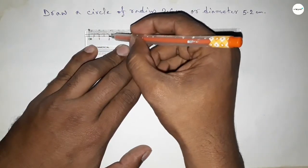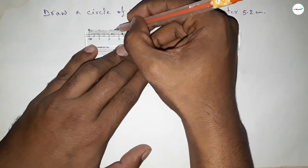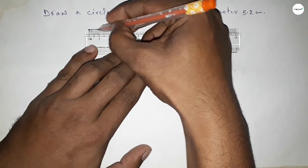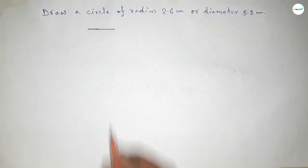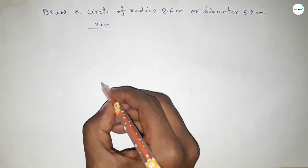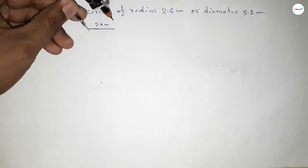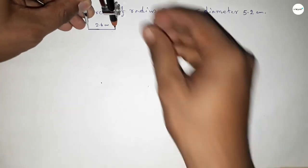So this is 0, 1, 2, and this is 5, 6. We know that the radius of a circle is half of diameter, so this is 2.6 centimeter. Now taking here a point, next taking the length 2.6 centimeter.